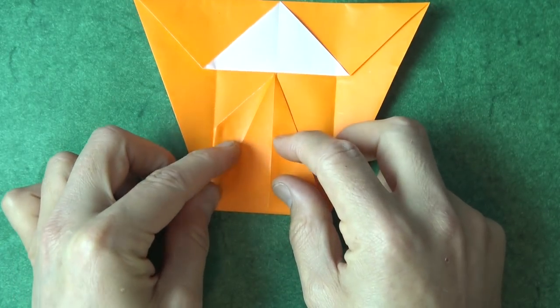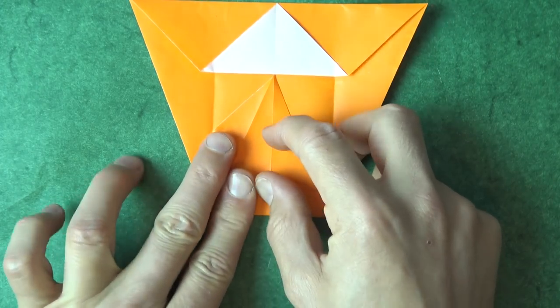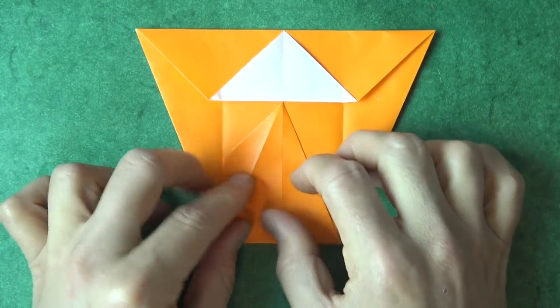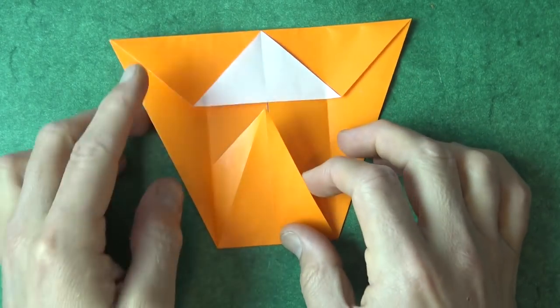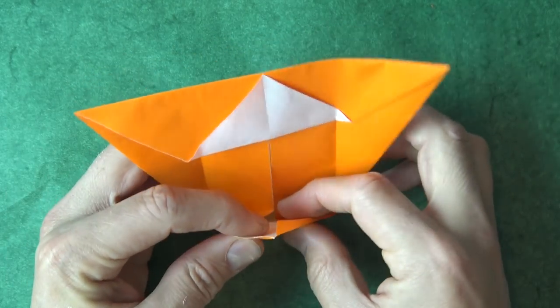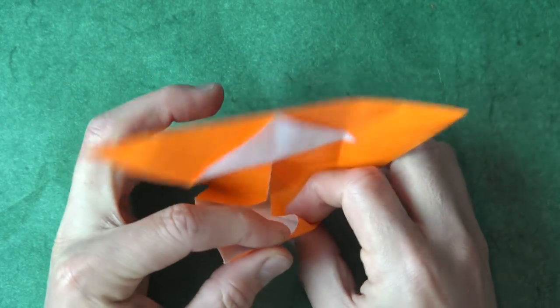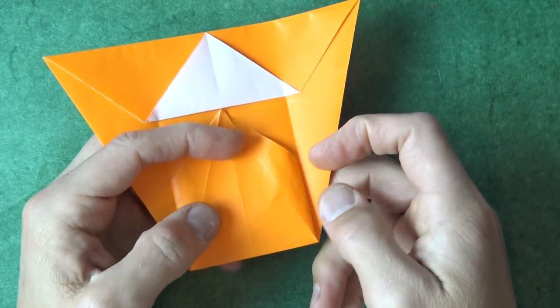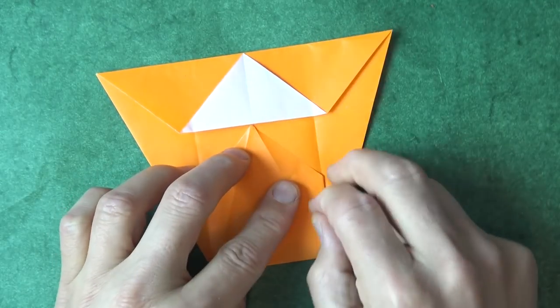It's like that. And when it aligns, flatten. And when you flatten it, you make a little fold right there. Okay, and now repeat on this side. Like that. That's the hard step.